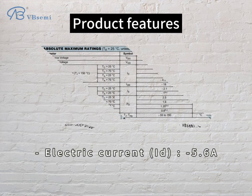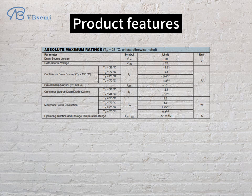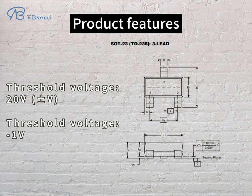Product features: channel voltage VDS -30V, current -5.6A, threshold voltage -1V.